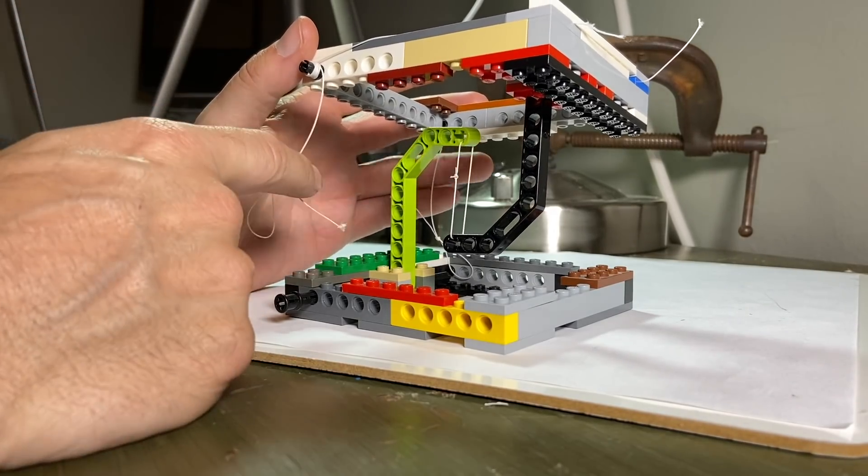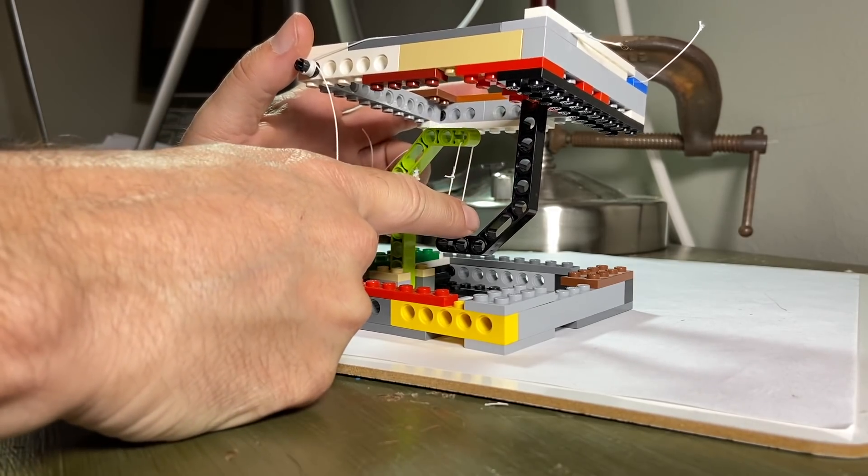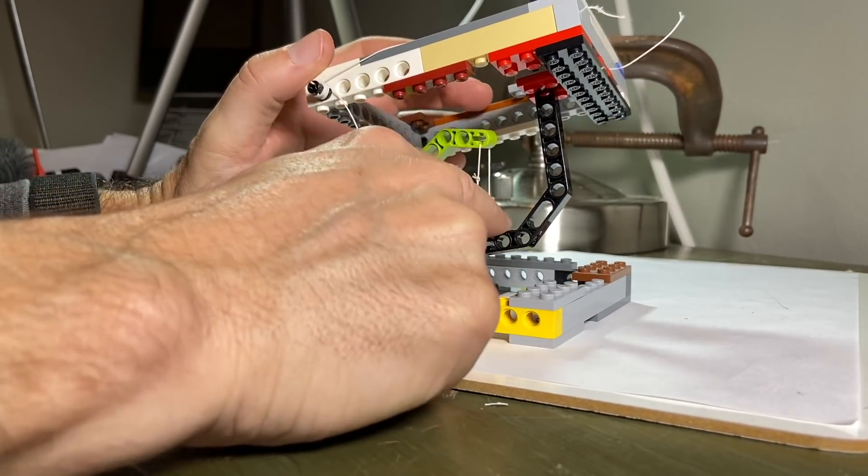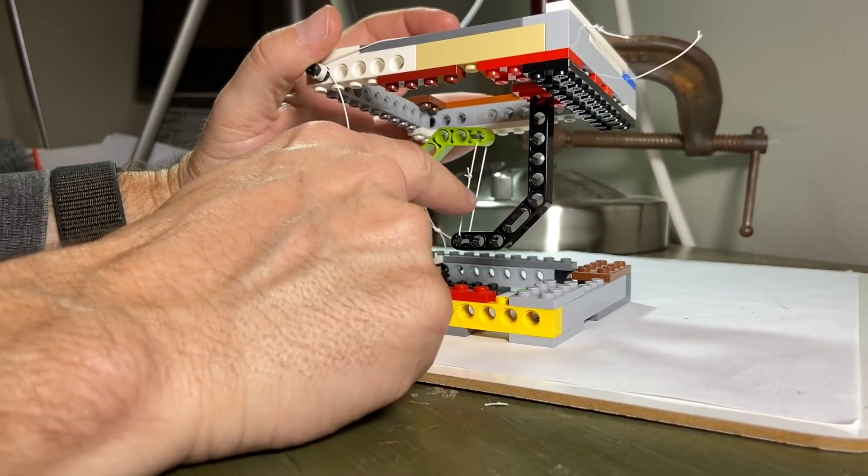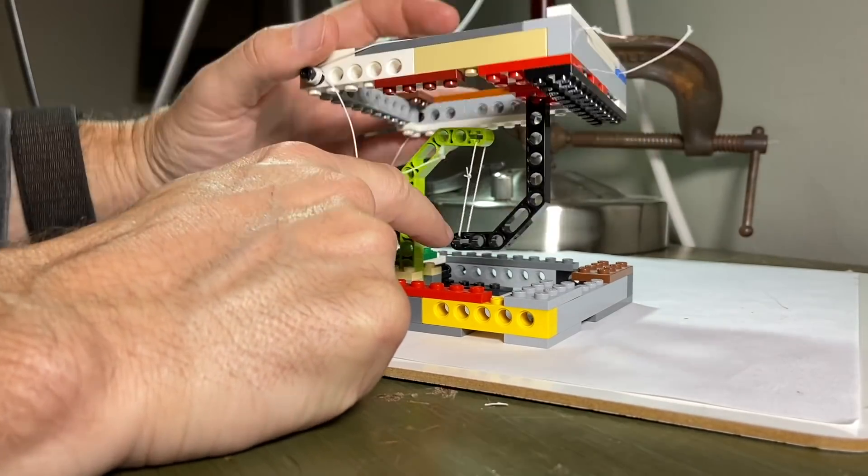Okay, so I've actually disconnected the two back strings, and so now you can see that it's really just hanging in this one string, but there you see what happens. So, since the center of mass is higher than the pivot point down here, it's just going to tip over.